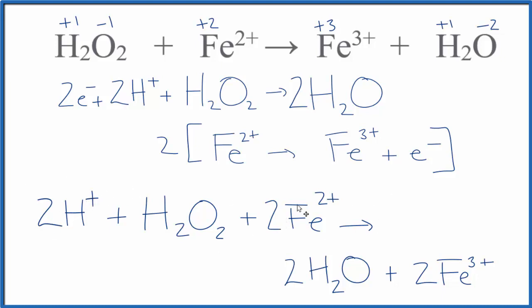So we have two plus. Two times two is four. So we have six plus over here. Two times three plus. That's six plus. So we've done the charge correctly. And if you count all the atoms up they'll be the same as well. This is Dr. B with the balanced redox reaction for H2O2 plus Fe2+. Thanks for watching.